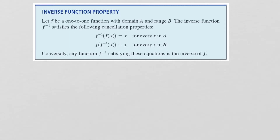Before we talk about how to find an inverse function, let's look at the inverse function property. If you have a one-to-one function f with domain A and range B, the inverse satisfies: f inverse of f of x equals x for every x in the domain, and f of f inverse of x equals x for every x in the range. If two functions are inverses, they must satisfy this property, and conversely, if this is true, they must be inverses.